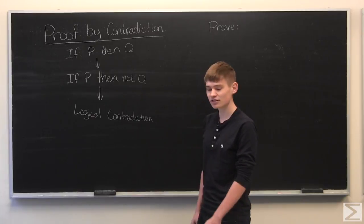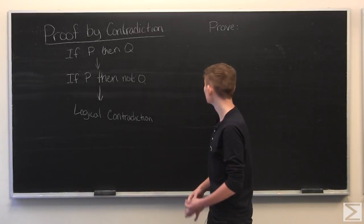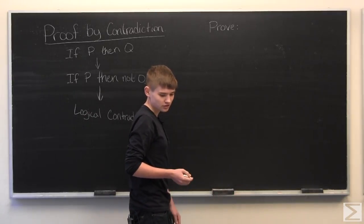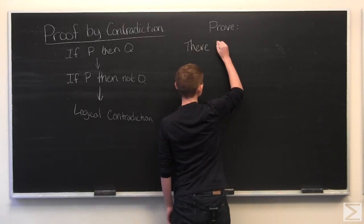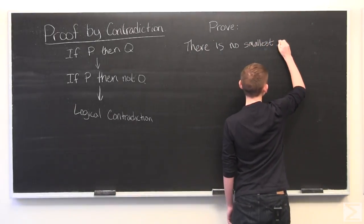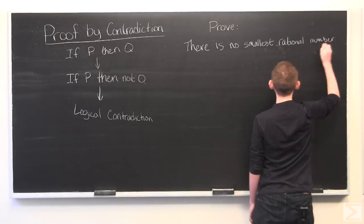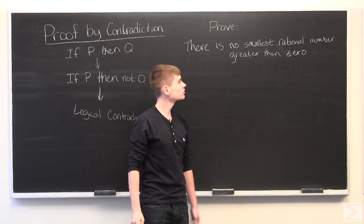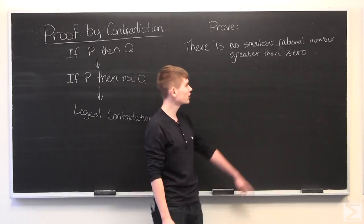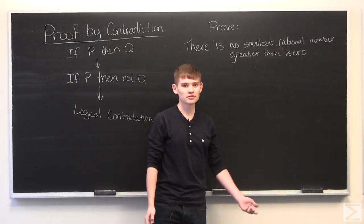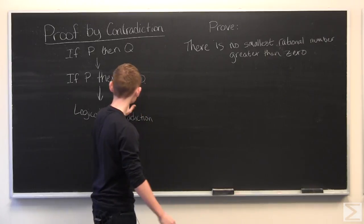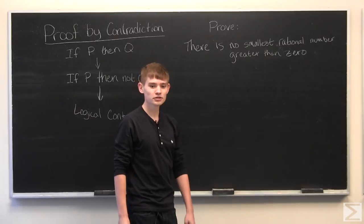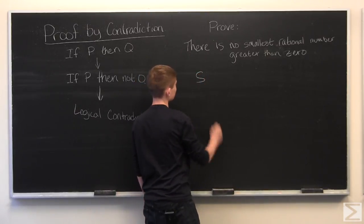Let's get started with a quick and easy proof by contradiction. Let's say we want to show that there is no smallest rational number greater than zero, where a rational number is any number that can be written as a fraction. Going by proof by contradiction, we're going to assume there is a smallest rational number greater than zero, and we're going to call it S for smallest.